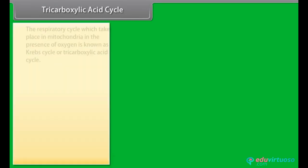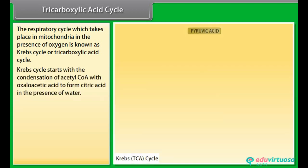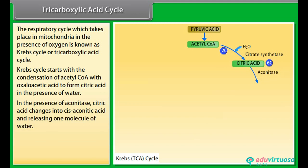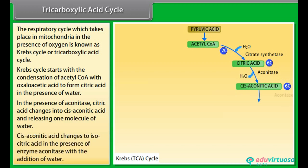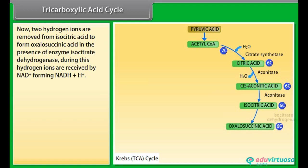The respiratory cycle which takes place in mitochondria in the presence of oxygen is known as Krebs cycle or tricarboxylic acid cycle. Krebs cycle starts with the condensation of acetyl coenzyme A with oxaloacetic acid to form citric acid in the presence of water. Citric acid changes into cis-aconitate and releases one molecule of water. Cis-aconitate changes to isocitric acid with the addition of water. Two hydrogen ions are removed from isocitric acid to form oxaloacetic acid in the presence of enzyme isocitrate dehydrogenase. Hydrogen ions are received by NAD⁺, forming NADH+H⁺.